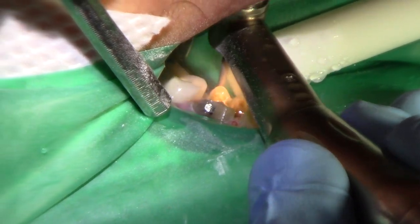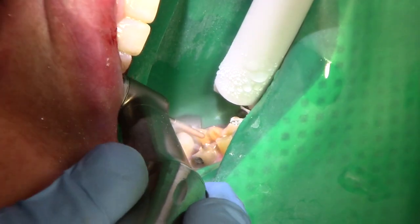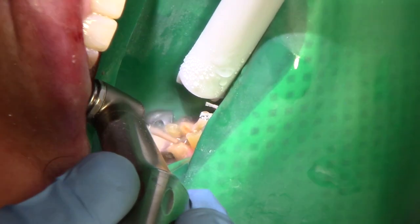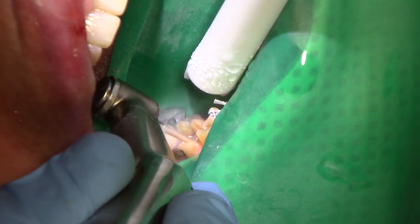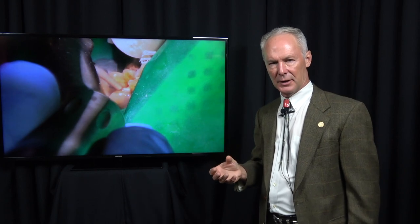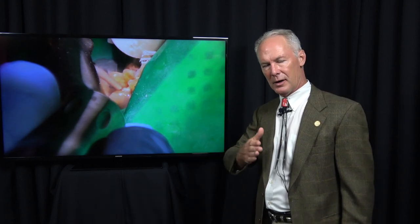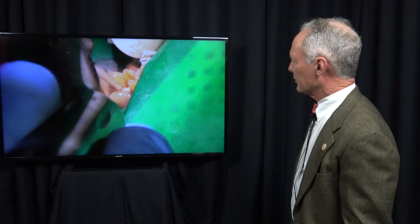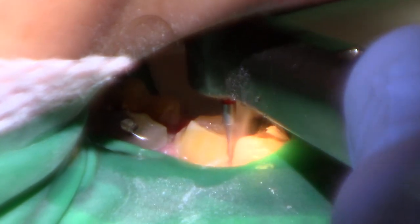Same thing on the molar, about a millimeter to a millimeter and a half for reduction. I'm rounding these edges and getting rid of any decay in the body of the tooth. I'll also use a number six or eight carbide round burr in a slow-speed handpiece to remove all of that decay under the crown on the molar.